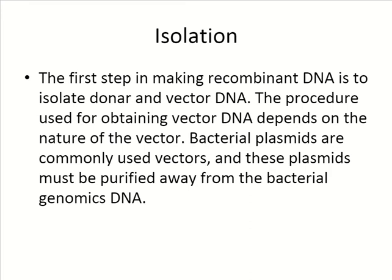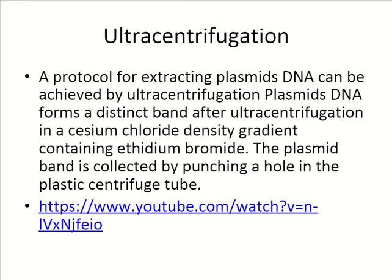Isolation is the first step in making recombinant DNA and is used to isolate donor and vector DNA. The procedure used for obtaining vector DNA depends on the nature of the vector. Bacterial plasmids are commonly used as vectors, and these plasmids must be purified away from other bacterial genomic DNA. There is a process called ultracentrifugation, which is a way of extracting plasmid DNA.